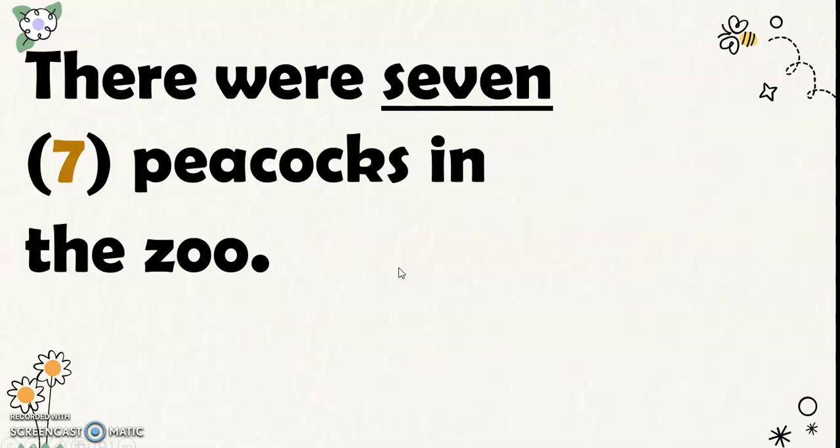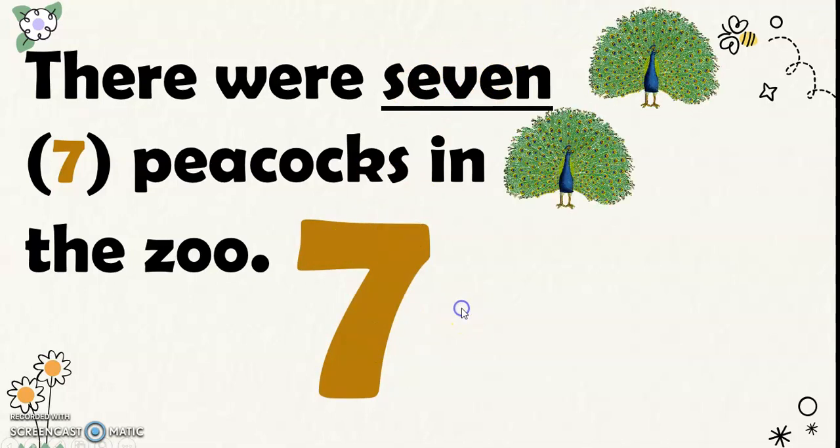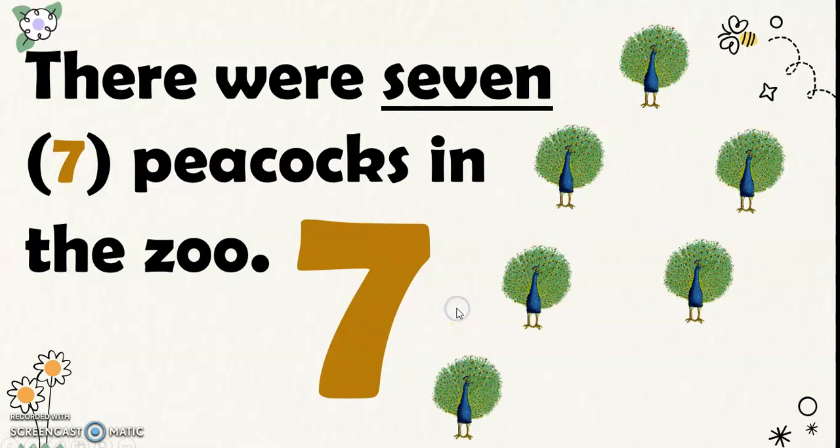Then, there were 7 peacocks in the zoo. We write 7 this way in word and 7 in number symbol. So 7 peacocks in the zoo.